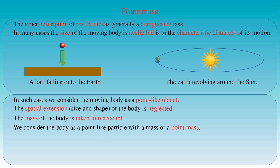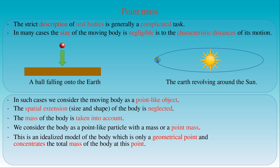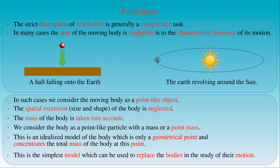The point-mass has no spatial extension but possesses mass; that is, the mass of the body is concentrated in a single geometrical point. This is the simplest idealized model which can be used to replace real bodies in the study of motion.